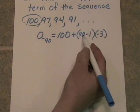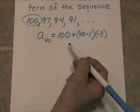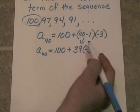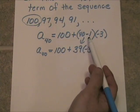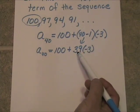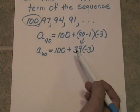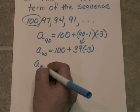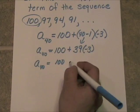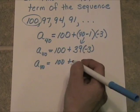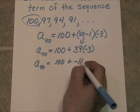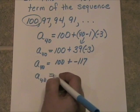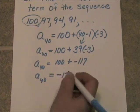This will tell you the number of times you've subtracted 3. So working inside the parentheses, we're subtracting 3 thirty-nine times. A_40 is going to be equal to 100 plus, this times this is negative 117, and when you add those together, a_40 will be equal to negative 17.